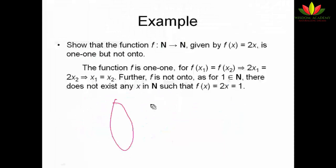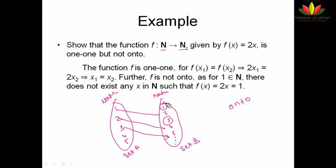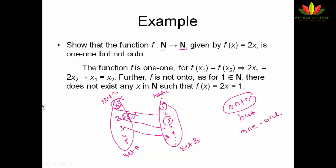If I draw an arrow diagram, set A has 1, 2, 3, 4, 5... and set B also has natural numbers. Then 1 maps to 2, 2 maps to 4, 3 maps to 6, and so on. For this to be onto, there should be no remaining elements in set B — but 1 and 3 are left unmatched. To get 1 as output I would need x = 1/2, and to get 3 I would need x = 1.5 — neither is a natural number. So it is definitely one-to-one but not onto.